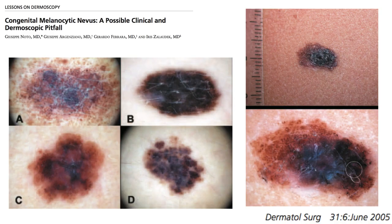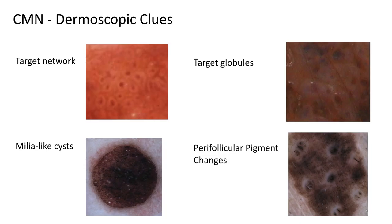This is well published in the literature. Here's a publication from 2005 where the authors report several different congenital nevi, all of them very clinically and dermoscopically concerning for melanoma. Are there additional dermoscopic clues that can let us know the lesion we're looking at may be congenital in origin?